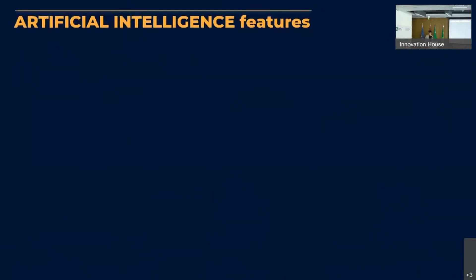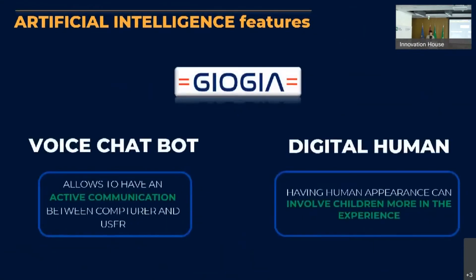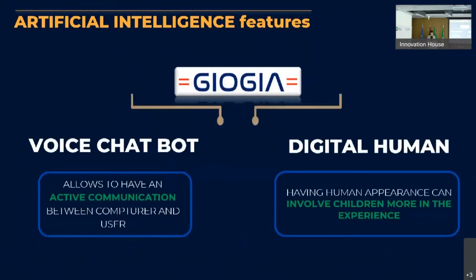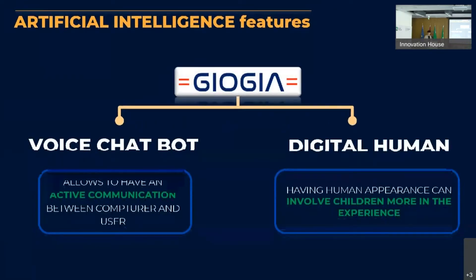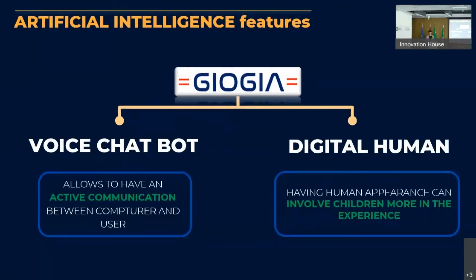Giojia was born from the union of two AI-based technologies: the voice chatbot, which allows the user to have an active communication with the engine, and the digital human, which, having human appearance, can capture more of the attention of children, involving them in the experience.